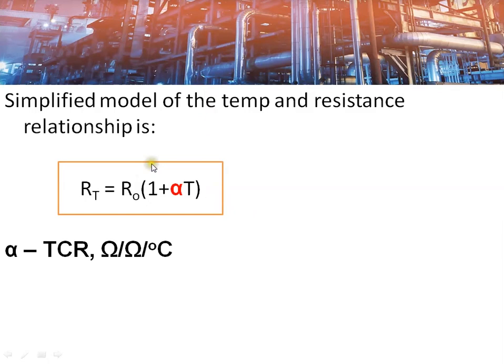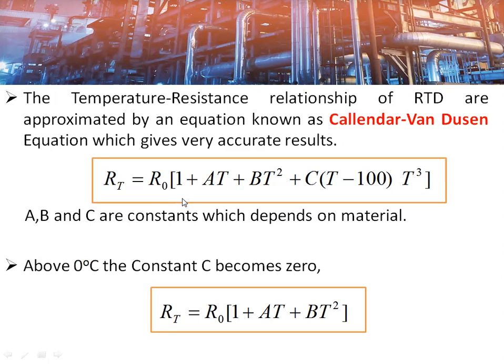This is a simplified model for the resistance and temperature relationship for RTDs, where RT is the resistance at a particular temperature, R0 is the resistance at 0°C, and alpha is the temperature coefficient of resistance. For this platinum RTD as per IEC 60751 standard, alpha is 0.00385.